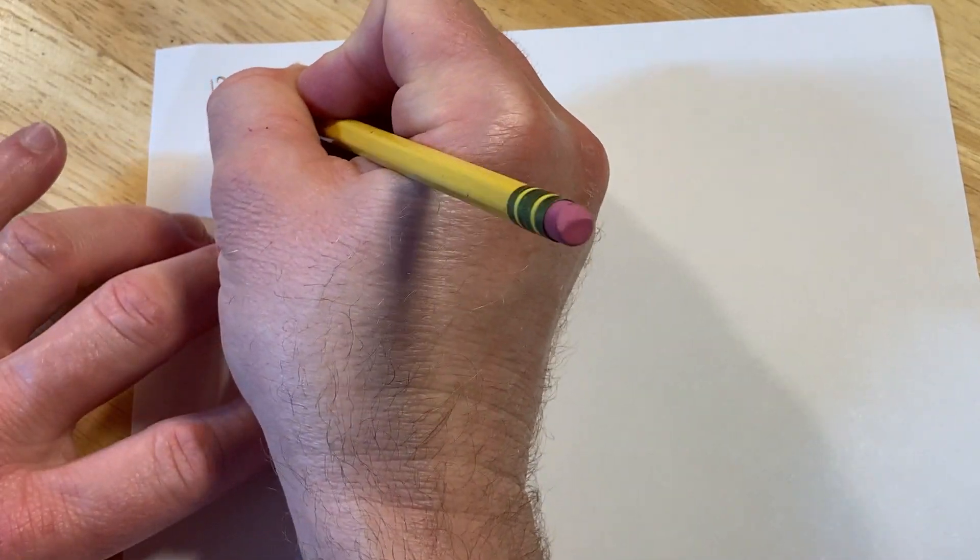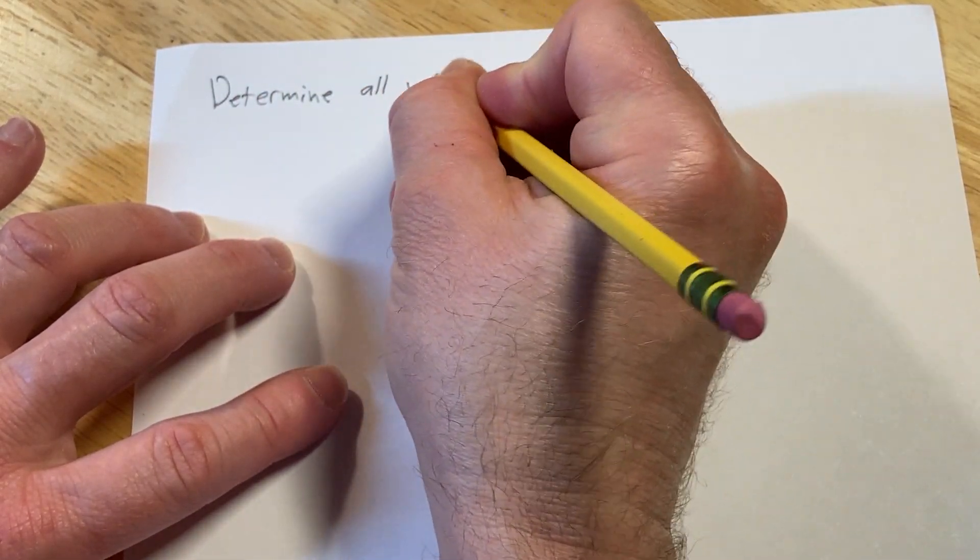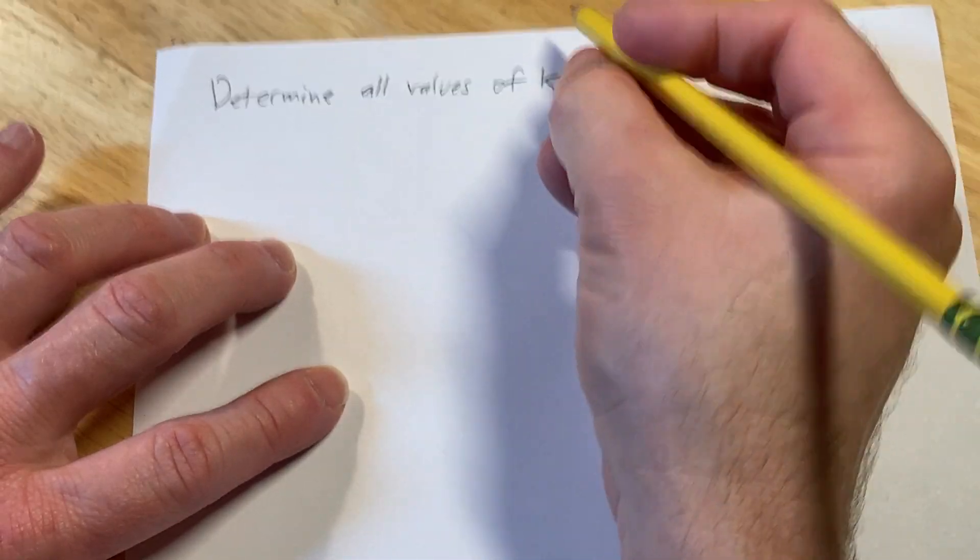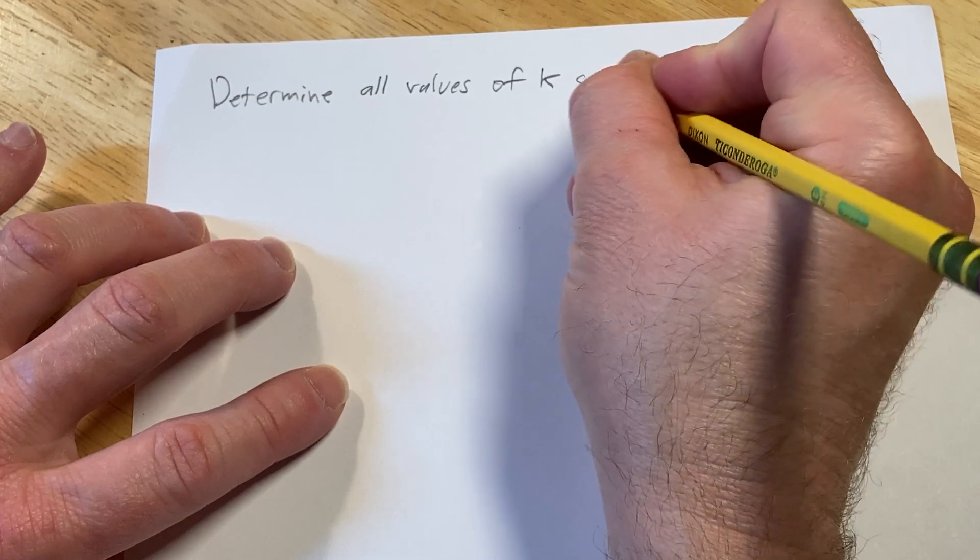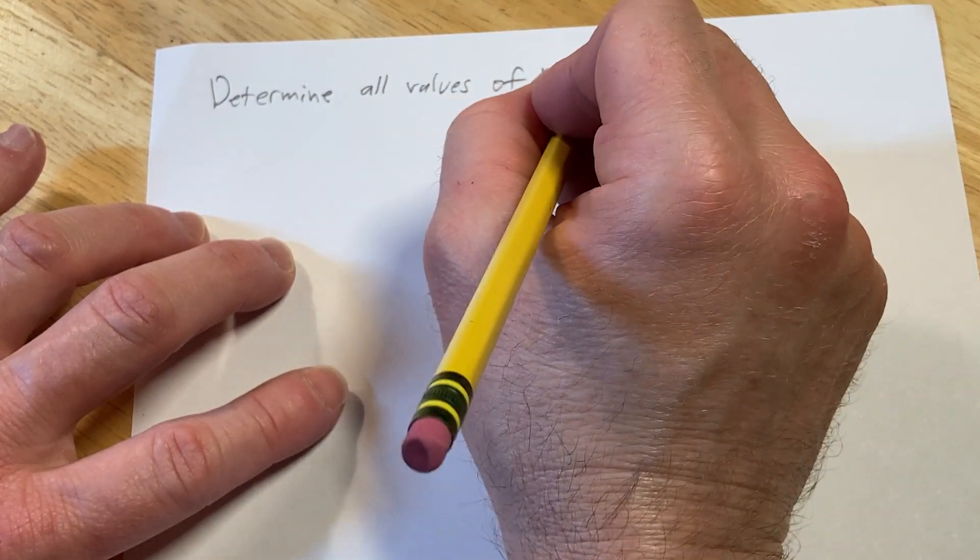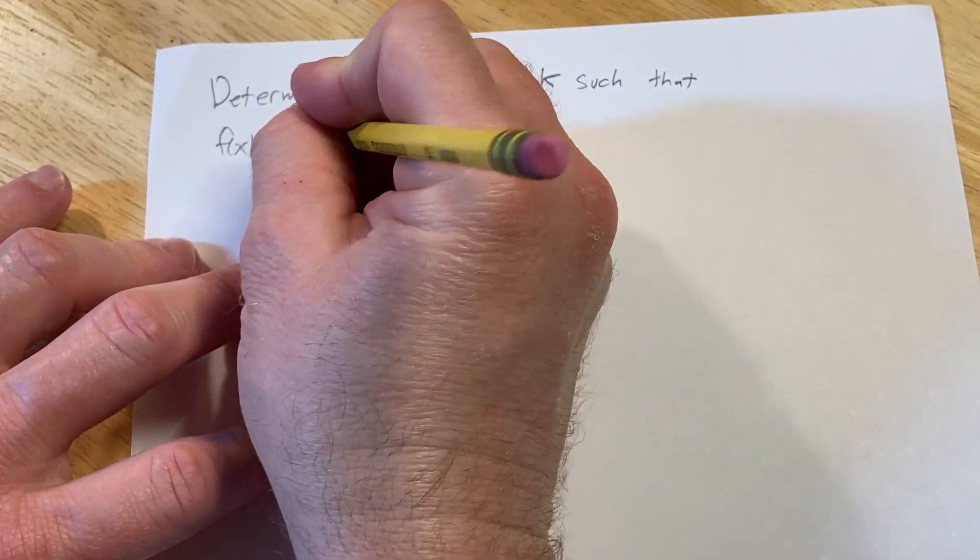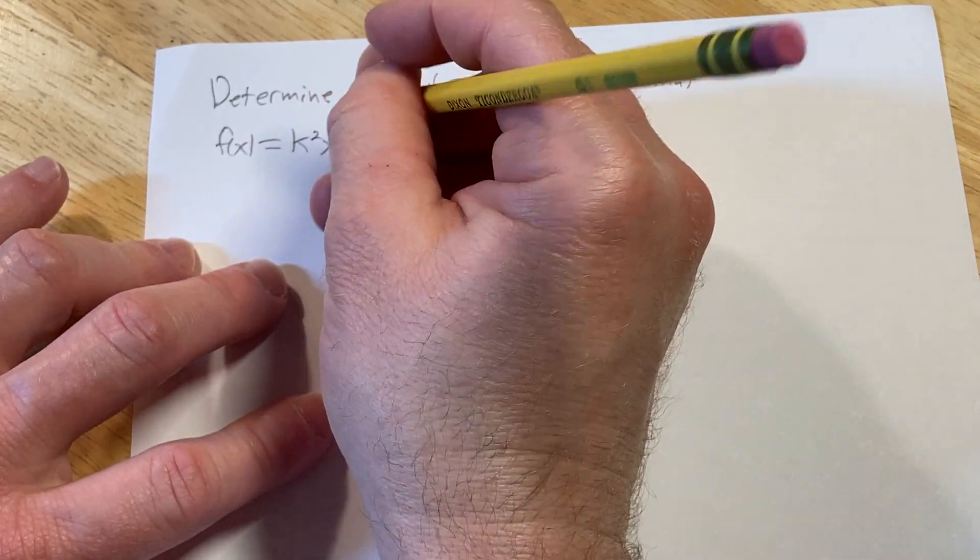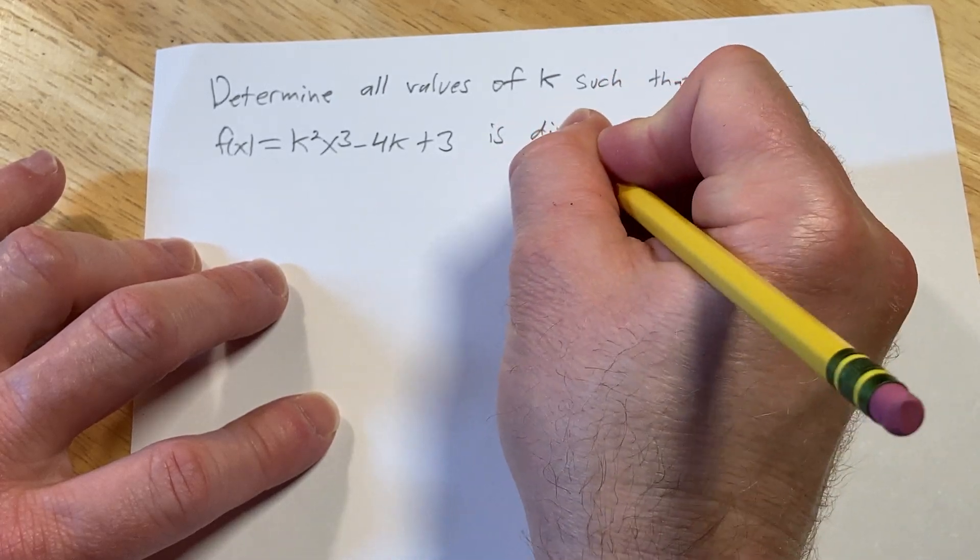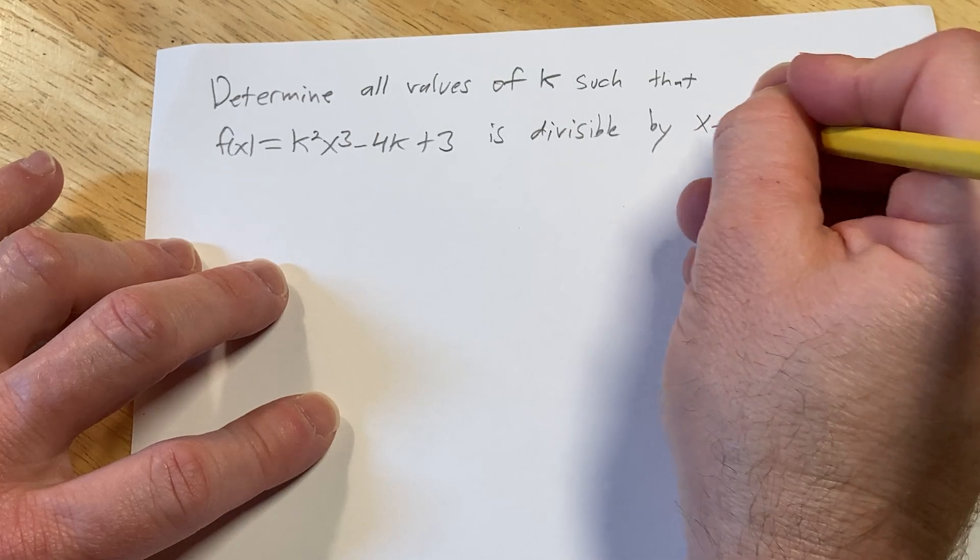We're going to determine all values of k such that f(x) equals k squared x cubed minus 4kx plus 3 is divisible by x minus 1.